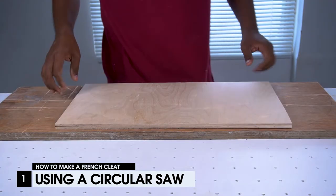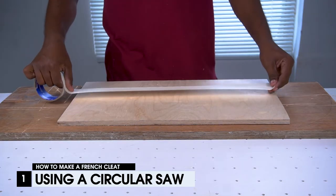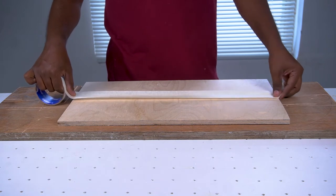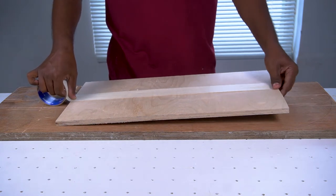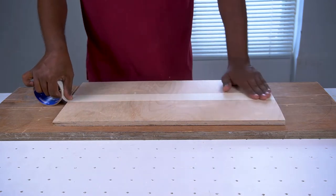The first method is with a circular saw. I'm using plywood to make the cleats. After placing the material on top of some sacrificial surface, fix masking tape over the intended cut line to prevent splinters.